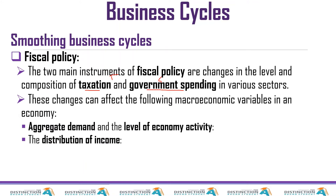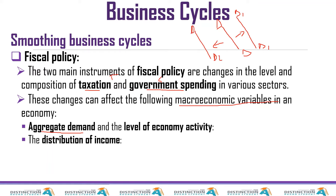These changes in tax and spending can affect macroeconomic variables in the economy. Number one, it affects aggregate demand. Tax and spending affect aggregate demand — it can either shift it to the right, stimulating aggregate demand, or to the left, discouraging it. It depends on what the minister of finance has done.